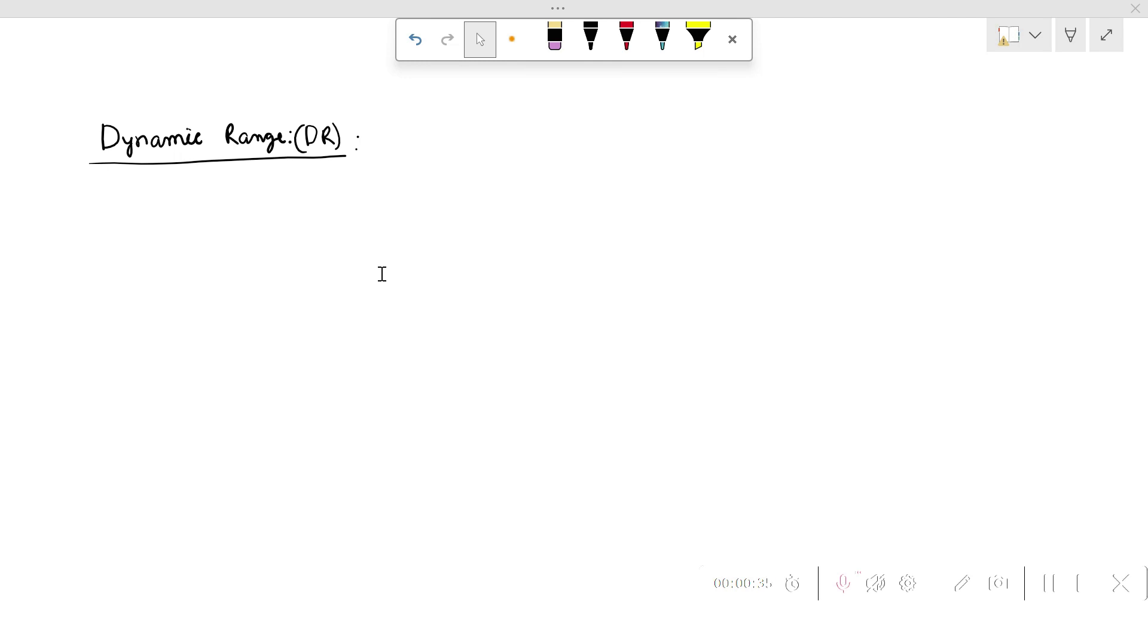Hi everyone, welcome back to our channel. In this video we are going to study about the dynamic range, particularly the dynamic range of the ADC. In general, what a dynamic range is, is basically the ratio between the largest and the smallest values that a certain quantity can assume.